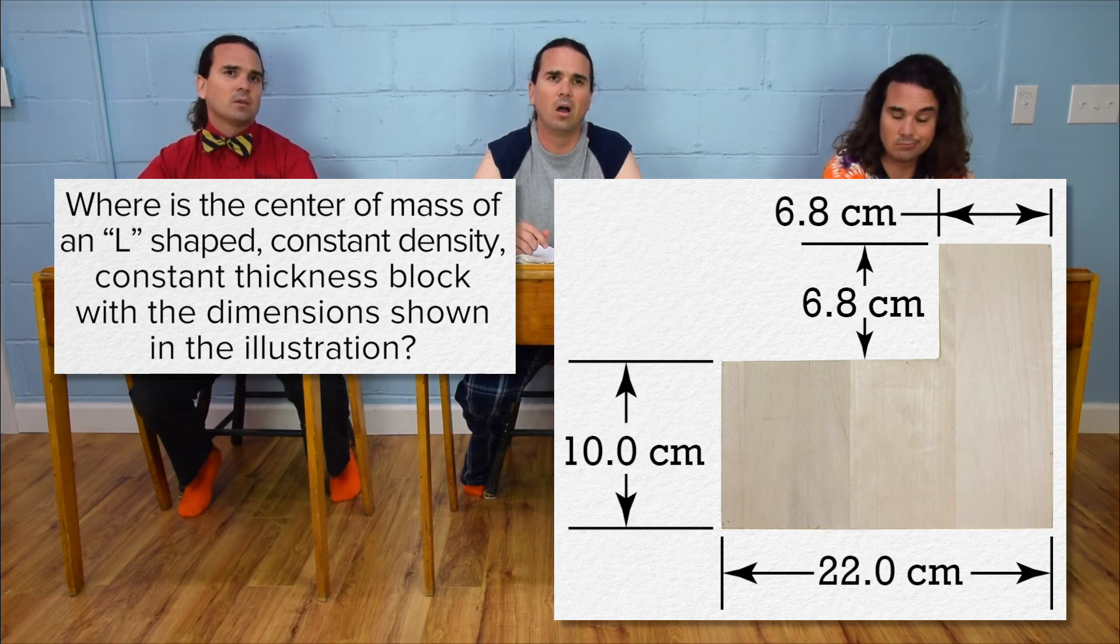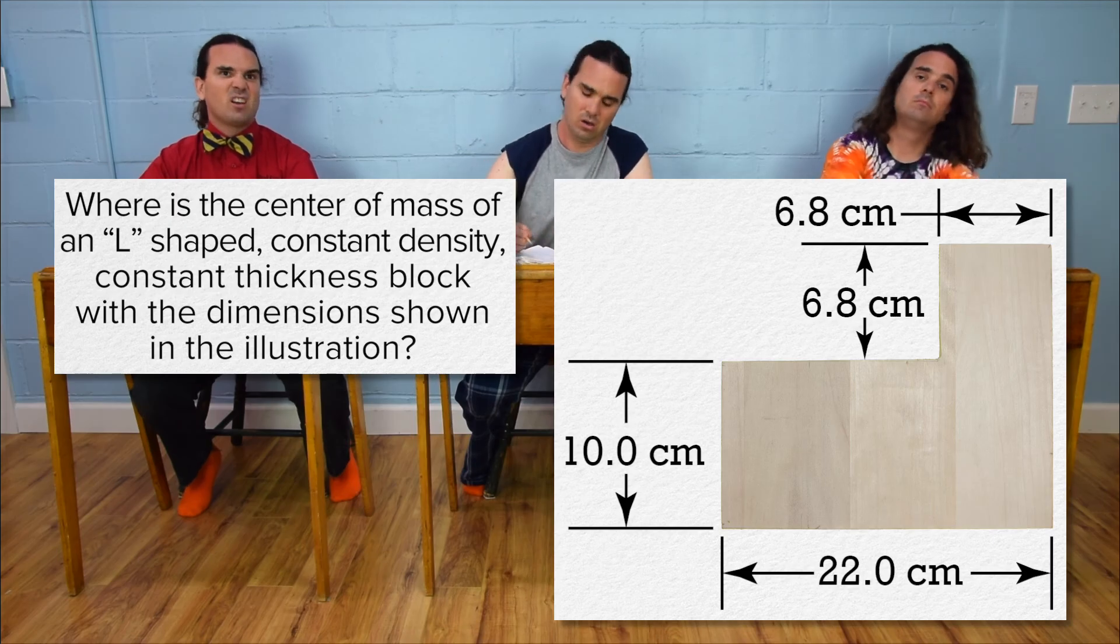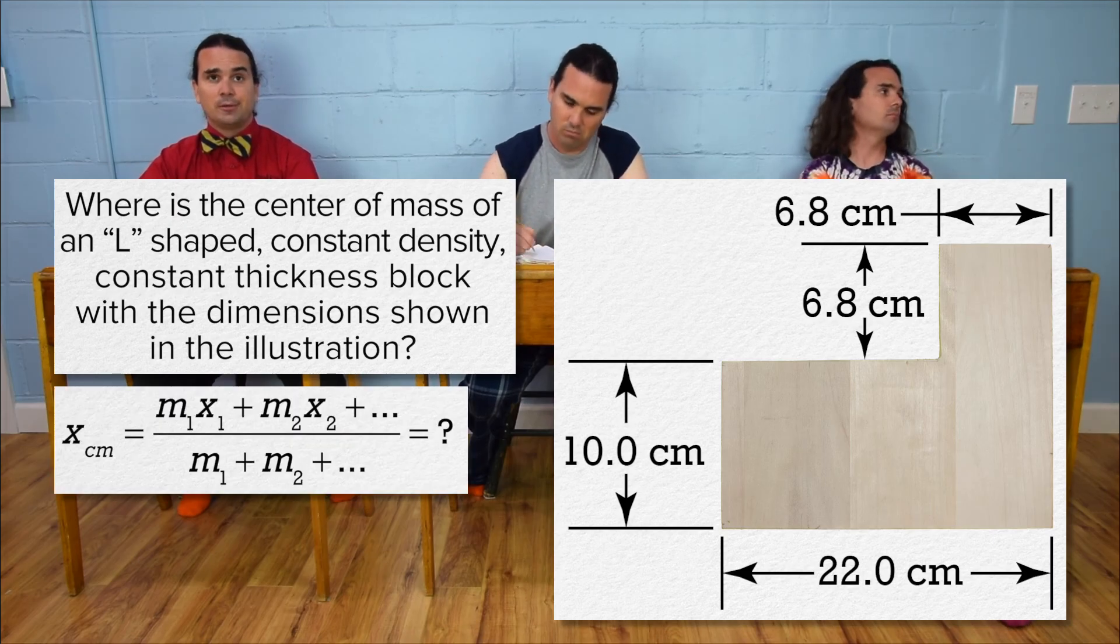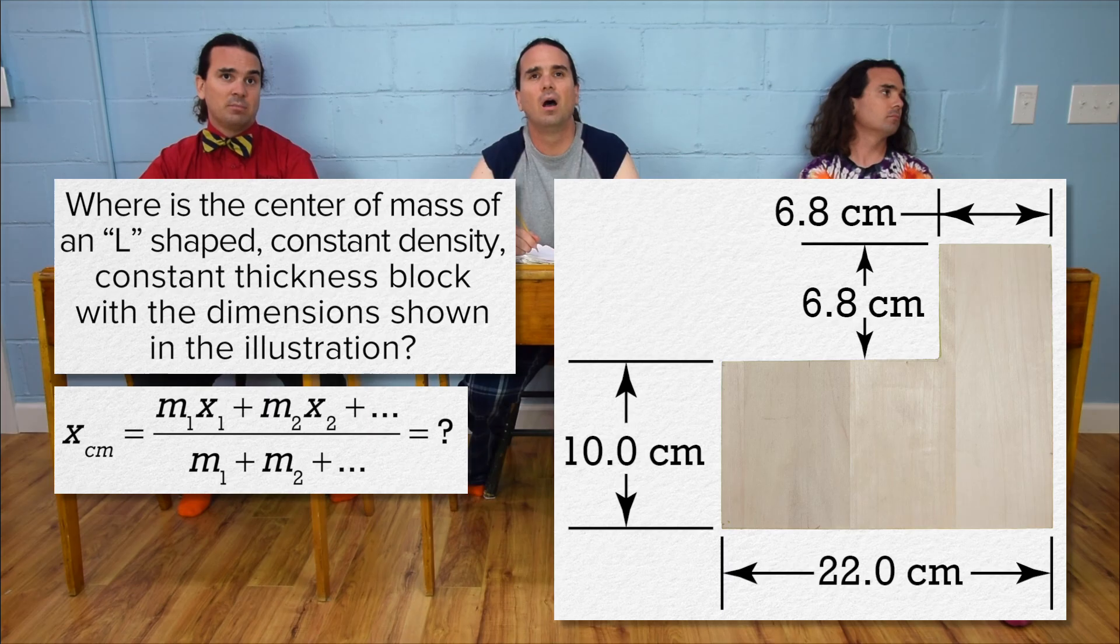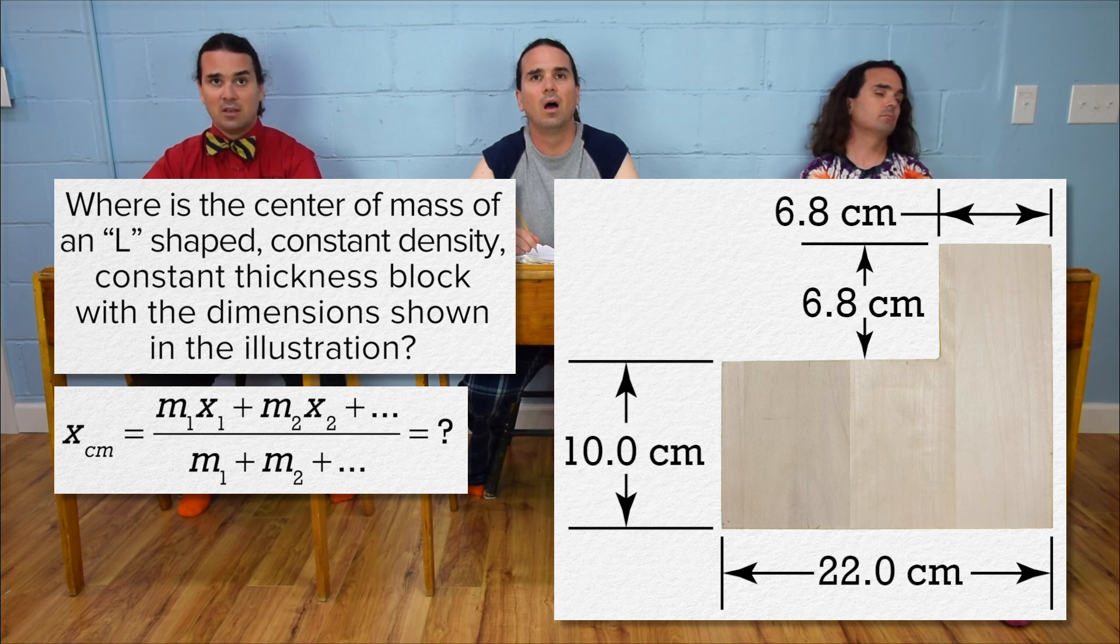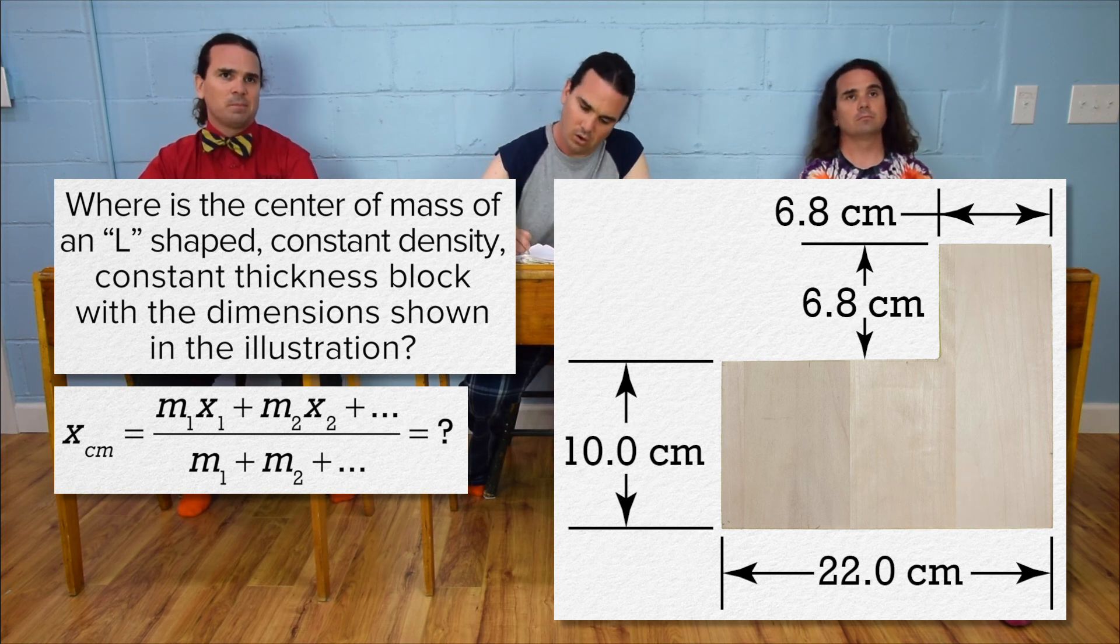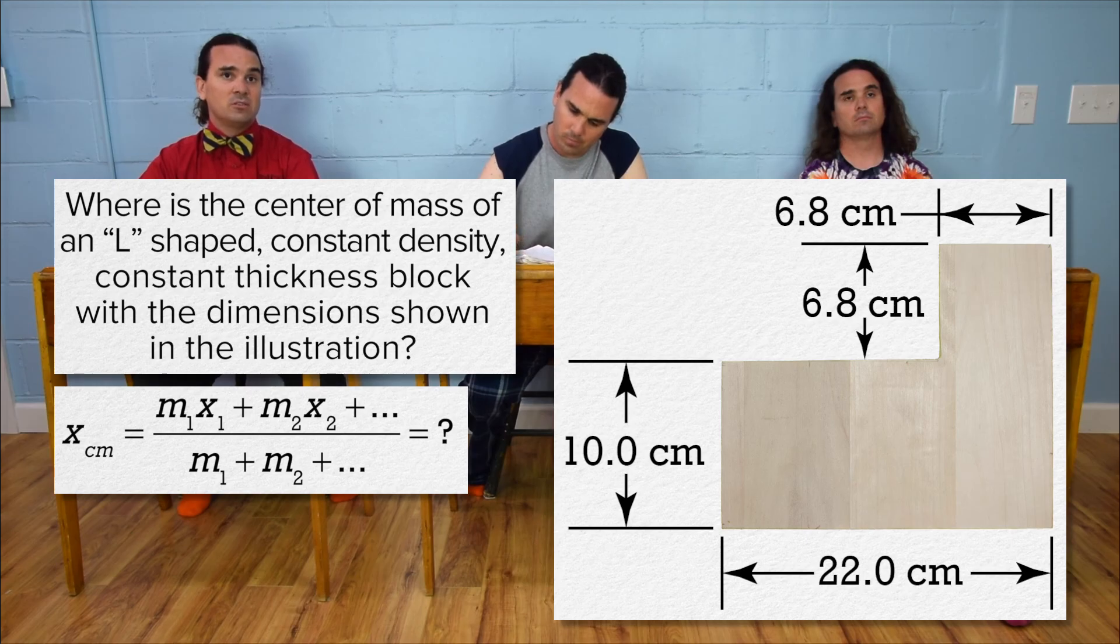Okay, well, we know the equation for the center of mass of a system of particles, so let's start there. The center of mass equals mass 1 times the position of mass 1 plus mass 2 times the position of mass 2, plus as many mass times position expressions as we have objects, all divided by the total mass. Other than that, I don't really know what to do because it's just one object.